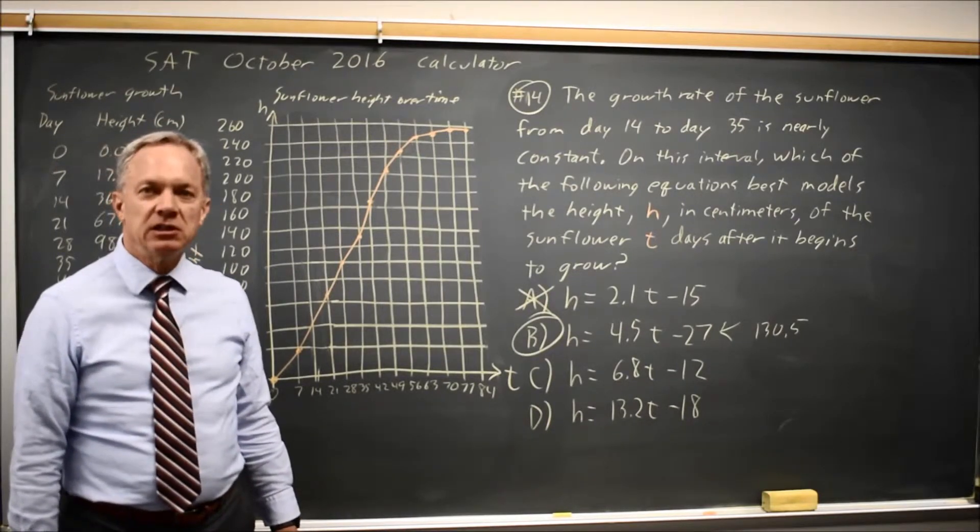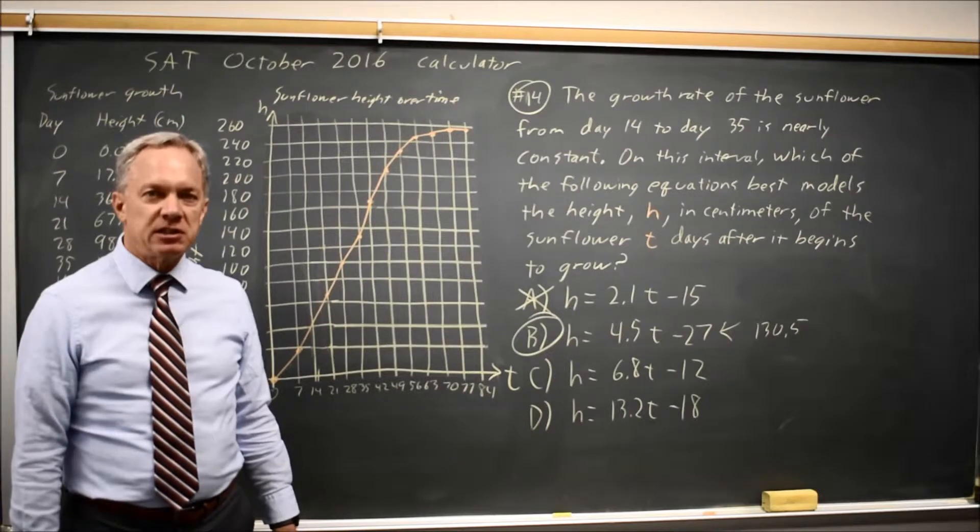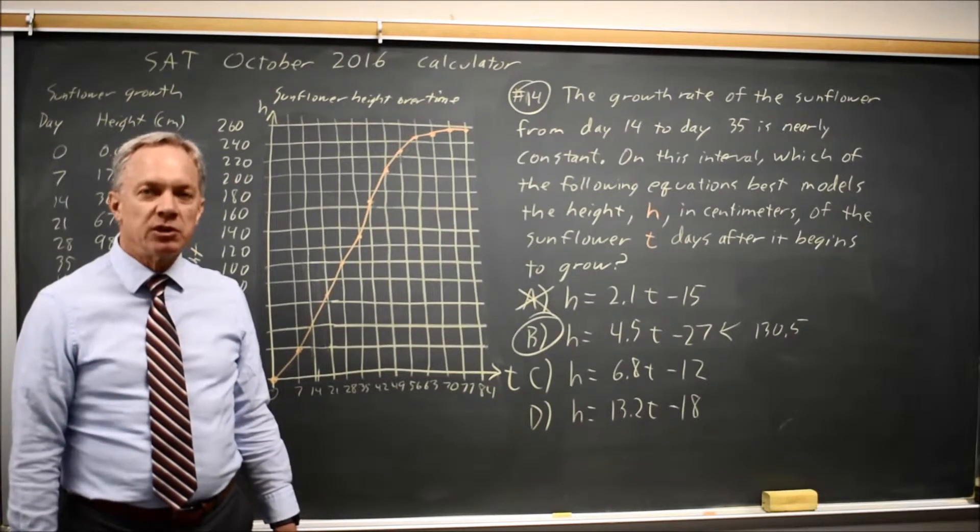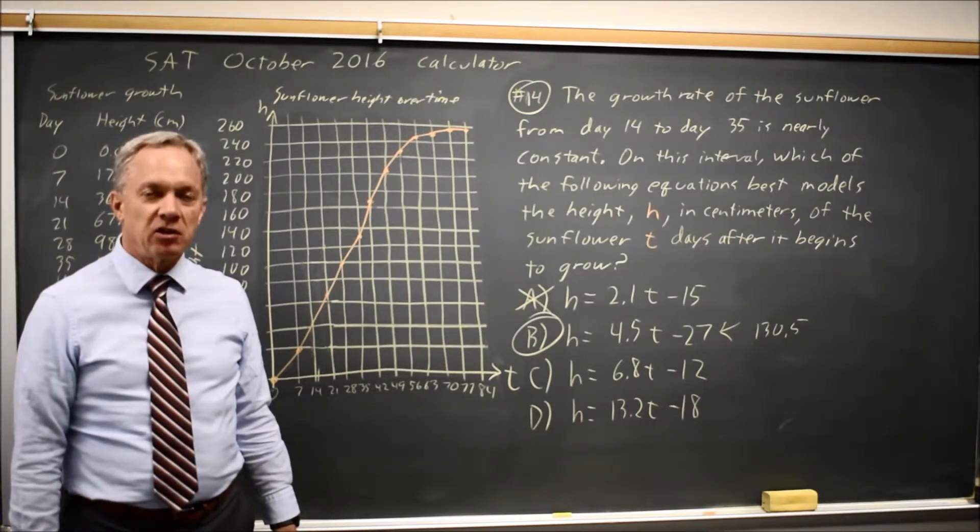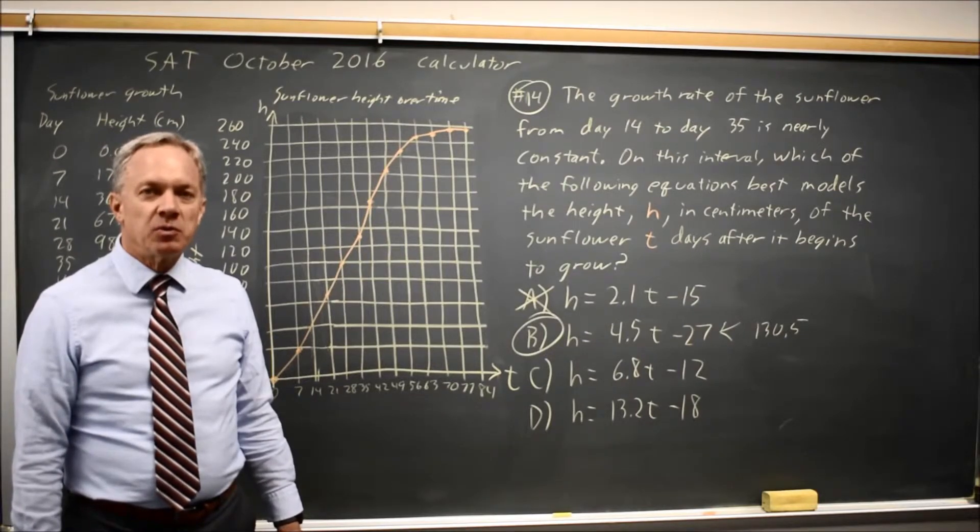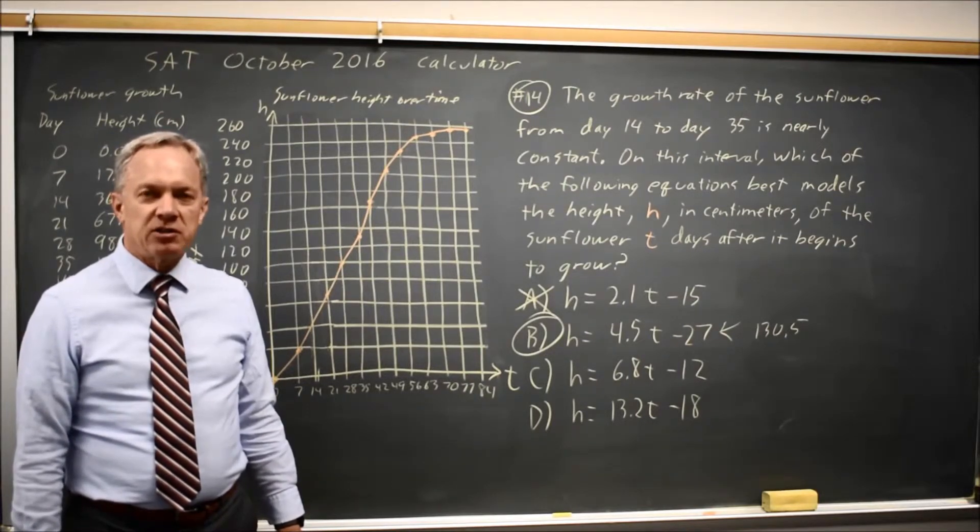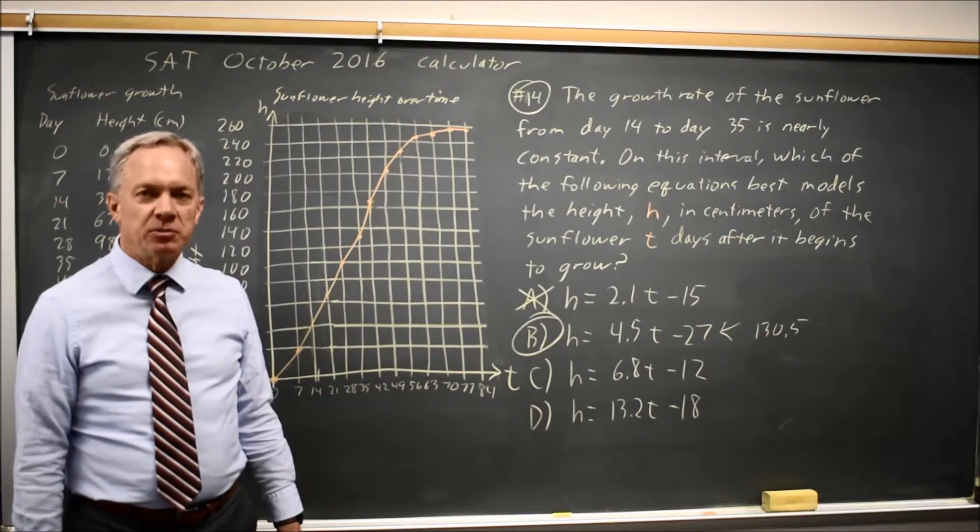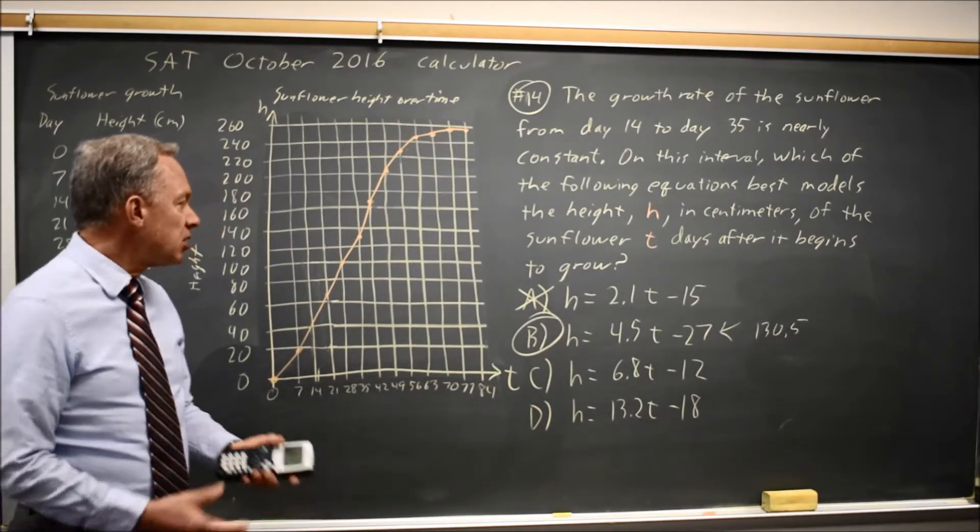When College Board asks you to fit a model to data, often the easiest way is to just substitute in points and cross out wrong answers until only one option is left. Or we can find the answer algebraically by finding the slope and, if we wish, find an intercept. A third option,